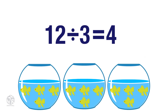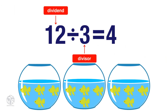Each part of a division equation has a name: the dividend, the divisor, and the quotient. The dividend is the number that we are dividing in the division problem. The divisor is the number that you are dividing by. The quotient is the answer. In this problem, 12 is the dividend, 3 is the divisor, and 4 is the quotient.